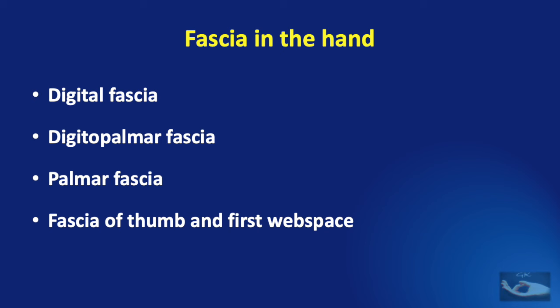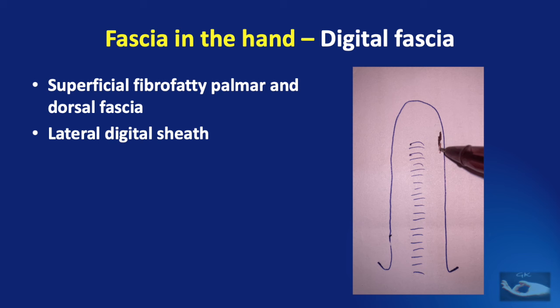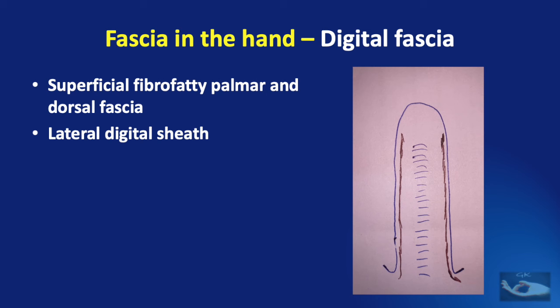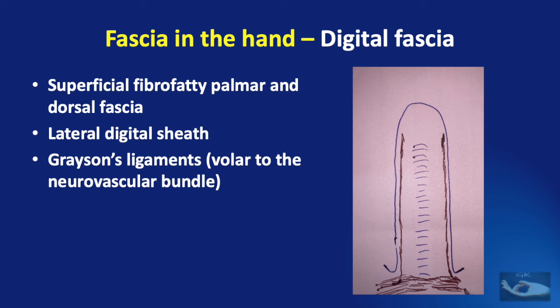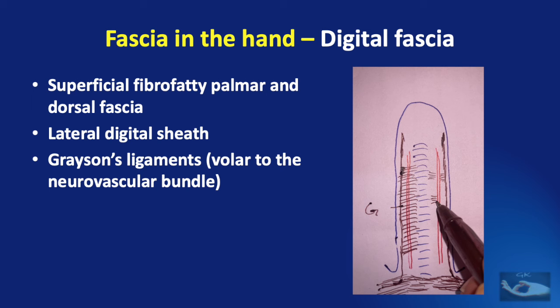And the fascia of the thumb and the first web space. The digital fascia of the finger consists of the superficial fibro-fatty palmar and dorsal fascia, the lateral digital sheath — a thin fascia under the skin on the lateral aspects of the fingers, that is both the ulnar and radial aspects — the Grayson's ligaments, that run from the phalanges to the lateral digital sheath volar to the neurovascular bundles on both sides, and the Cleland's ligaments, sheets of fascia that lie between the phalanges and the lateral digital sheath dorsal to the neurovascular bundle.